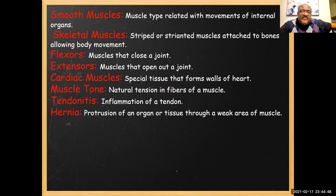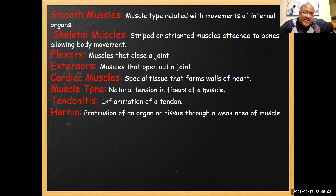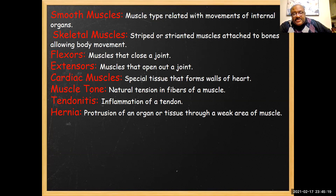Cardiac muscle has tons of mitochondria because it can never stop or rest — it has to have constant energy. That's why you need to eat: your heart needs glucose for energy, because it can never rest even when you're sleeping. Muscle tone is the natural tension in muscle fibers. Tendonitis — once you get it, you'll know it. It's inflammation of the tendons; there's nothing you can do but take anti-inflammatories, apply ice, compression, and elevate it. You have to stop the sport or activity for a while.